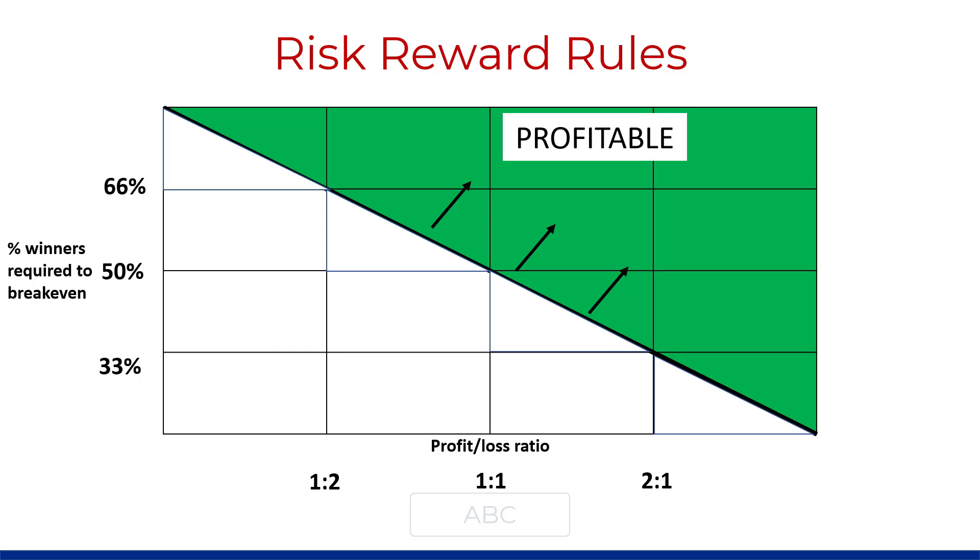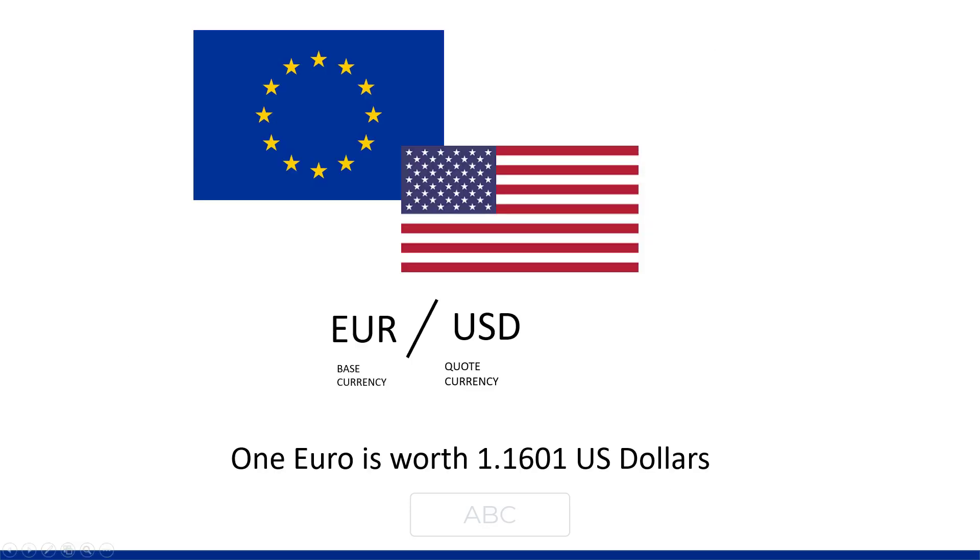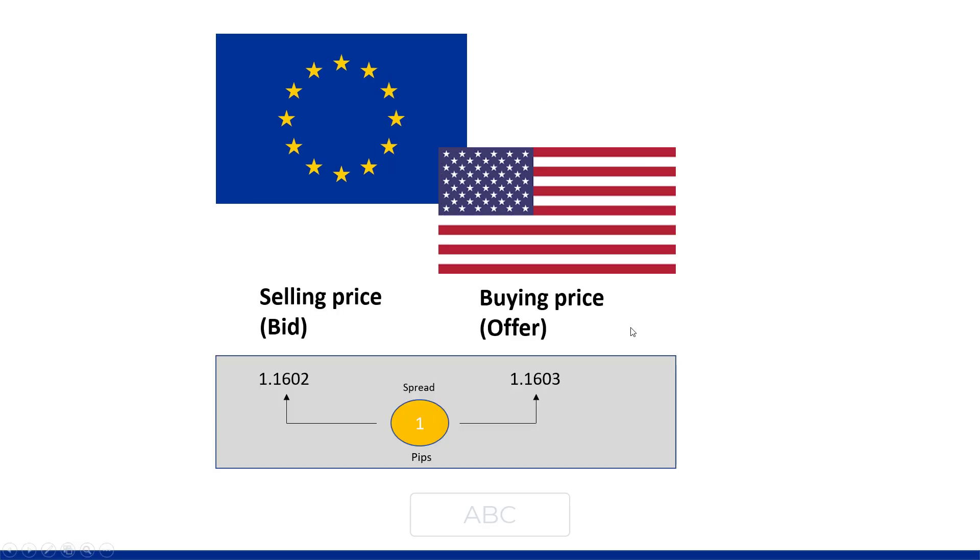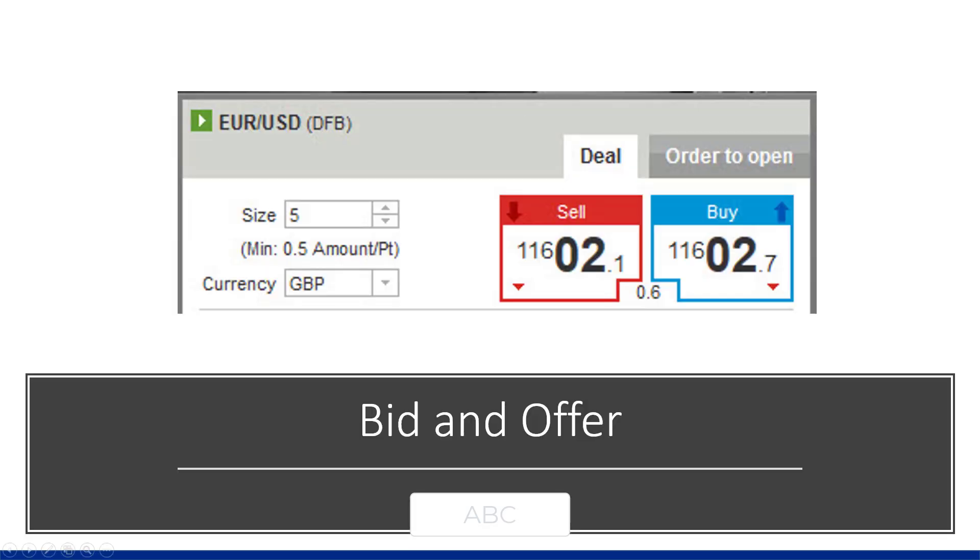Let's dive into the next section on price movement, because we need to know stop placement and how much to risk on a trade. Here's an example with EUR/USD, the most traded currency pair. The base currency is on the left, quote currency on the right - one euro is worth $1.1601. The buying price (offer) is $1.1603, the selling price (bid) is $1.1602. The buying price is always greater than selling price, and in the middle there's a spread - in this case one pip. Volatile markets have wider spreads. EUR/USD spreads are nice and tight since it's the most traded pair.